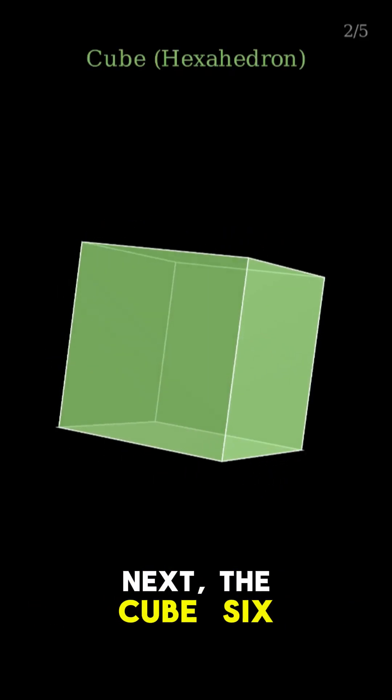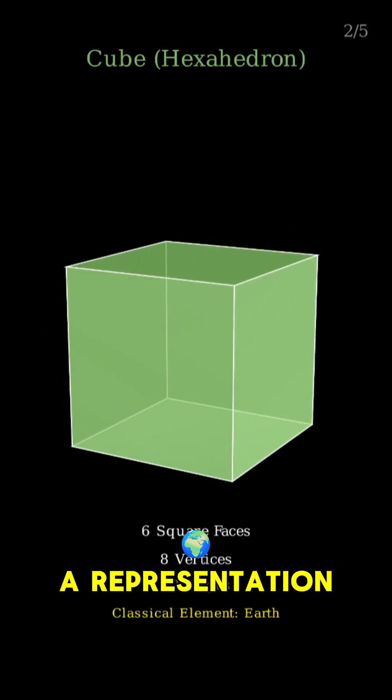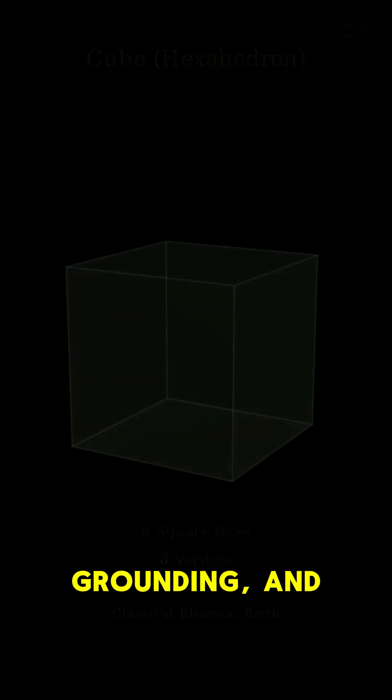Next, the cube. Six square faces, eight vertices, 12 edges, a representation of earth, grounding, and stability.